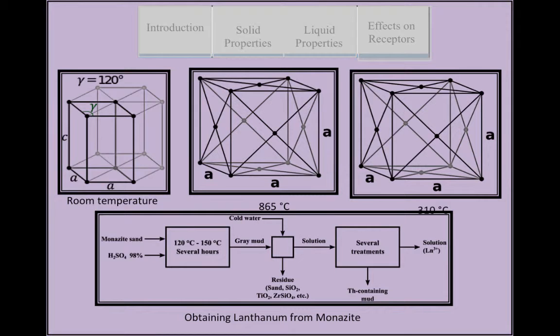Lanthanum is a hexagonal close packed crystal structure at room temperature, but the crystal structure changes to face centered cubic at 310 degrees Celsius and into a body centered cubic structure at 865 degrees Celsius.